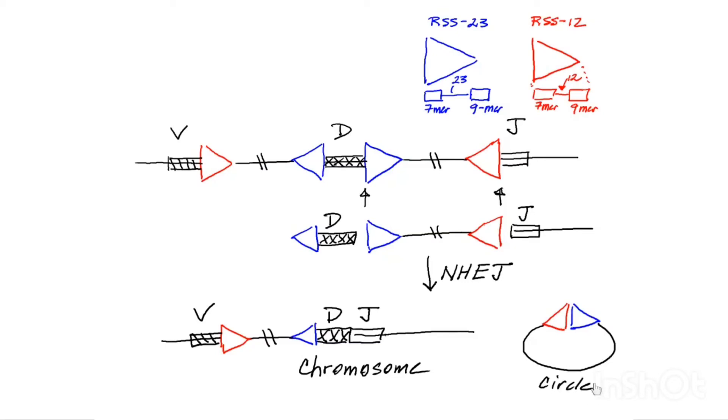And the chromosome is now the immunoglobulin heavy chain after D to J joining has occurred. And what happens next, of course, is V to DJ joining. And you just go through the whole thing all over again. So that is a quick overview of the mechanism of VDJ recombination.